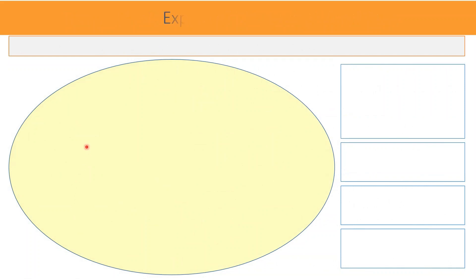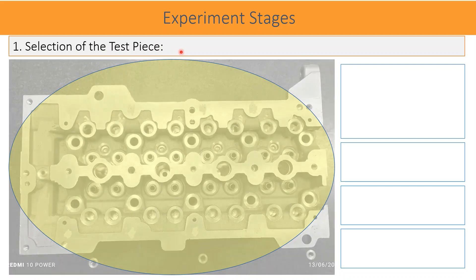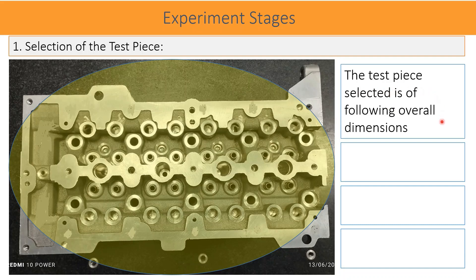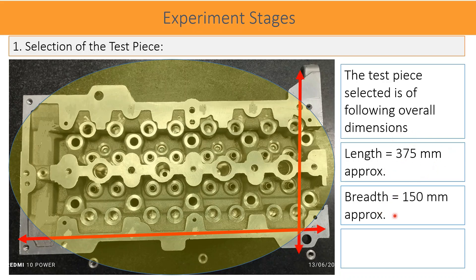Selection of the test piece. The experiment carried out is discussed here step by step. Very first, we chose a component as shown in the photograph. The overall dimensions of the part: length is 375 mm approximately, breadth 150 mm, and the height is 100 mm approximately.